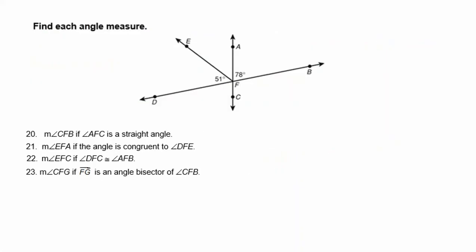All right, here's our first problems that we're going to look at in this video. We have this figure, which is going to be used for problems 20, 21, 22, and 23. We're given that angle EFD is 51 degrees, and we're given that angle AFB is 78 degrees. It also looks like angle AFC is a straight line, and so is DFB.